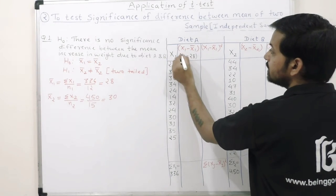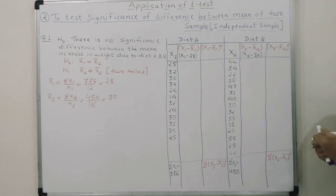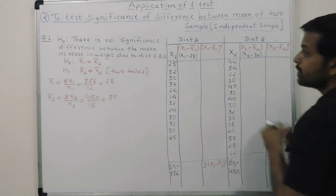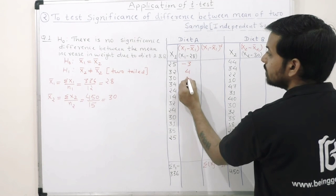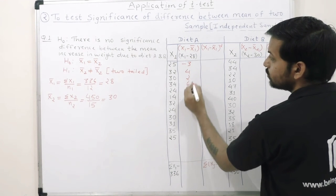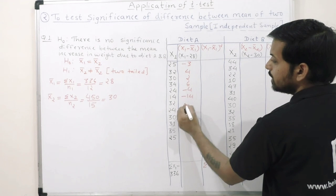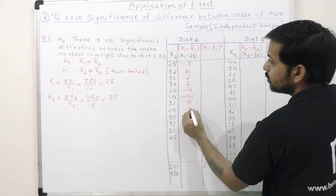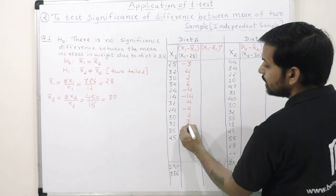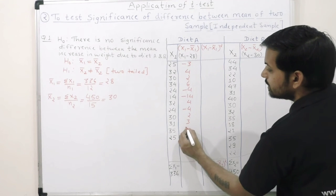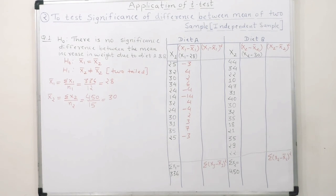Computing deviations for diet A from x̄1=28: 32-28=4, 30-28=2, 34-28=6, 24-28=-4, 14-28=-14, 32-28=4, 24-28=-4, 30-28=2, 31-28=3, 35-28=7, 25-28=-3.